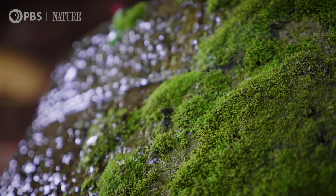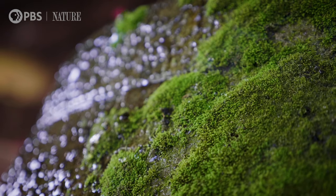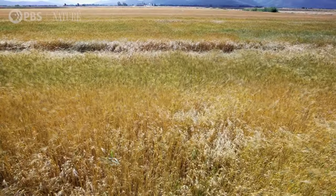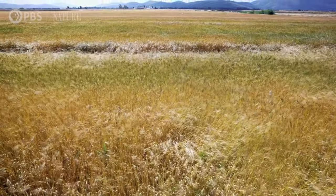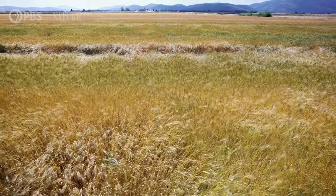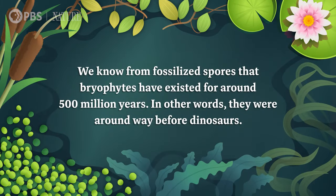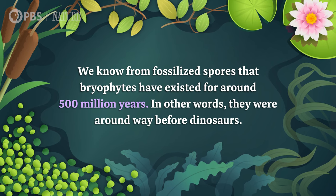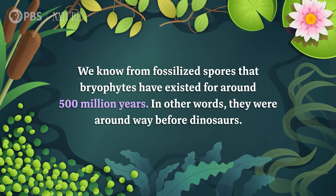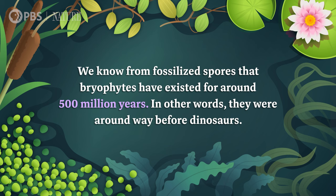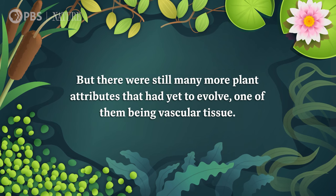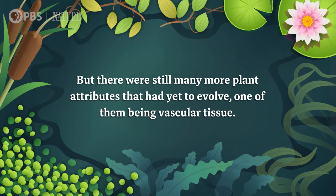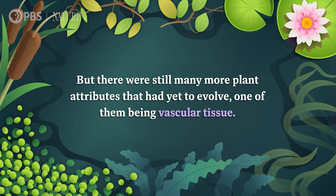While Hofmeister initially studied this phenomenon in so-called lower plants like mosses, he later discovered that all plants on Earth do some version of this cycle. Plants are way more complex than we knew, and they have complicated family lives. We know from fossilized spores that bryophytes have existed for around 500 million years — they were around way before dinosaurs. But there were still many more plant attributes that had yet to evolve, one of them being vascular tissue.